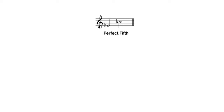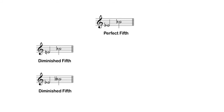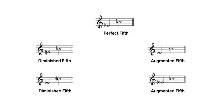A diminished fifth would be narrower than a perfect fifth. If we raise the bottom pitch — E flat up to E natural — we have made the interval one half step narrower and have diminished it. We could likewise take the B flat and lower it to a B double flat, also making the interval diminished. Augmented intervals are wider — if we take E flat to B flat and raise the higher pitch to B natural, we now have an augmented fifth. We could also augment the interval by lowering the bottom pitch to an E double flat.